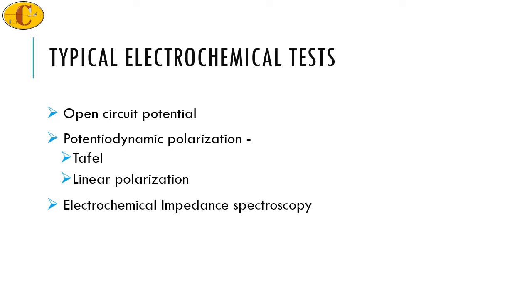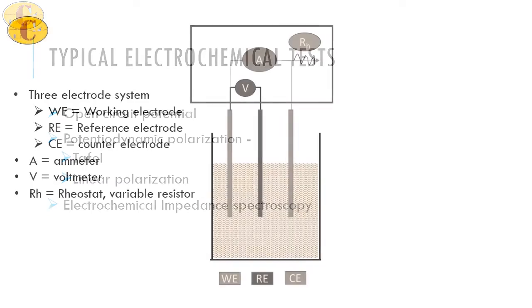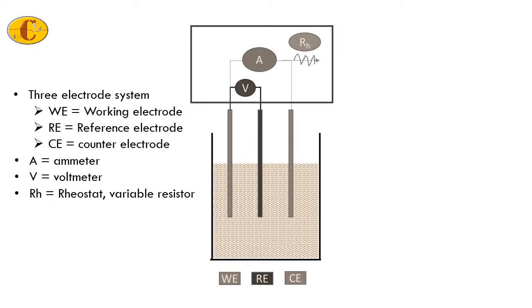We then apply a potential and then we measure the current. So the typical system that is used is a three-electrode system where you have a working electrode, which is essentially your sample, then you have a counter electrode, and you have a reference electrode.